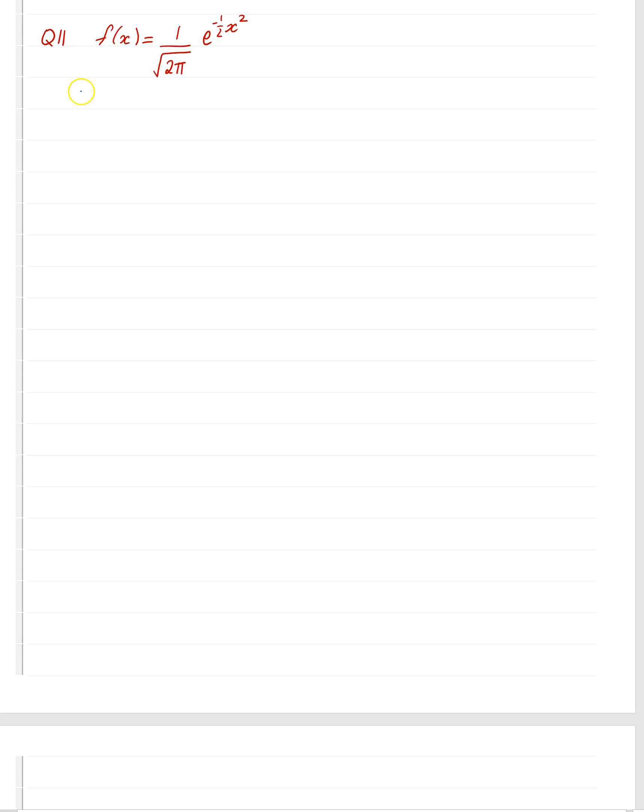So we want to find when it's increasing or decreasing. In other words, we need to differentiate. So it looks a little bit ugly, but this whole thing here is just a constant. So we write 1 over root 2π, and we're differentiating e to a function. So we write e and that function, and